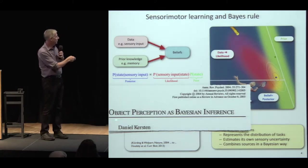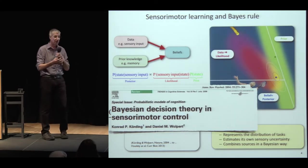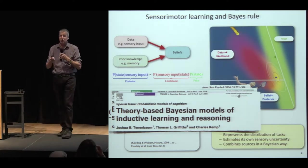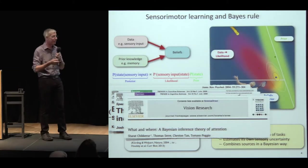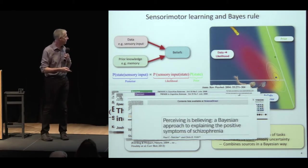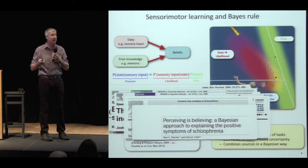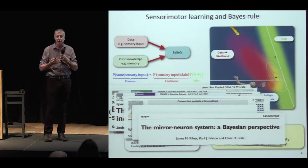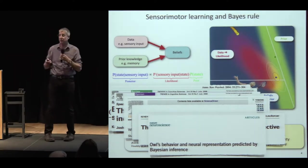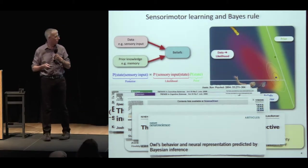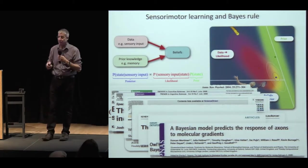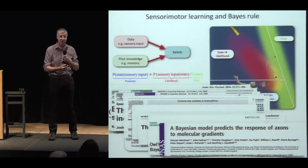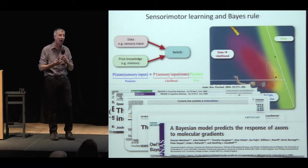About ten years ago, people suggested object perception was Bayesian; we suggested Bayesian decision theory for sensory motor control; and Josh Tenenbaum and Tom Griffiths said think about Bayesian models of cognition. It didn't stop there — there are Bayesian theories of attention, Bayesian explanations of schizophrenia, and even a Bayesian perspective on mirror neurons. So it turns out Bayes can explain everything. It's not just a human thing — animal behavior and even how axons go down molecular gradients is Bayesian. Bayes has really taken over. As we heard in yesterday's talk, if you're not Bayesian, you're not going to be optimal — so it's not surprising that evolution will strive towards Bayesian solutions.